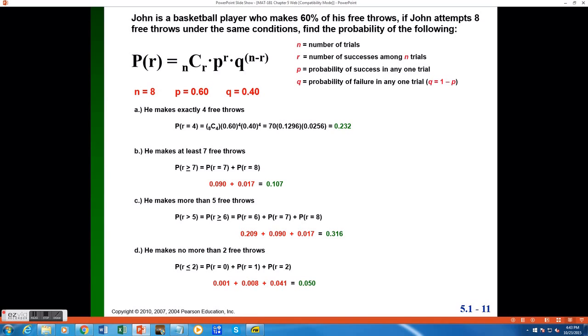The q-value is the probability of failure on any one particular trial. And since he makes 60% of his free throws, he must miss 40%. So we will use q equal to 0.4 for this problem. Since a binomial experiment can only have a success or a failure as an outcome, the probabilities for p and q must add up to 1.